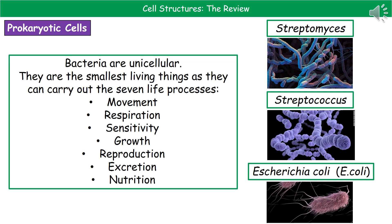We also need to know some examples of prokaryotic cells. There are three common types of bacteria: Streptomyces, Streptococcus, and Escherichia coli, or E. coli — the one that causes food poisoning. From the diagrams, you can see that all three bacteria have very different structures and shapes, with different features around the outside.